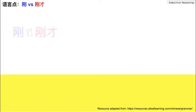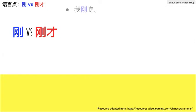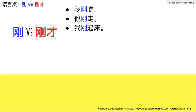Today let's take a look at the differences between 刚 and 刚才. Examples of using 刚: 我刚吃 — I have just eaten. 他刚走 — he has just left. 我刚起床 — I have just woken up.